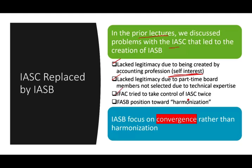The International Accounting Federation tried to control the IASC twice and failed. Also, most importantly in my opinion, was FASB's position — FASB is the U.S. position toward harmonization. When FASB did a study they found that International Accounting Standards differed 74% of the time versus U.S. GAAP, and that was 1996, over 20 years ago. FASB said no, we're not going to adopt your standard — we have a lot of work to do. That's why the IASC was replaced with the IASB.